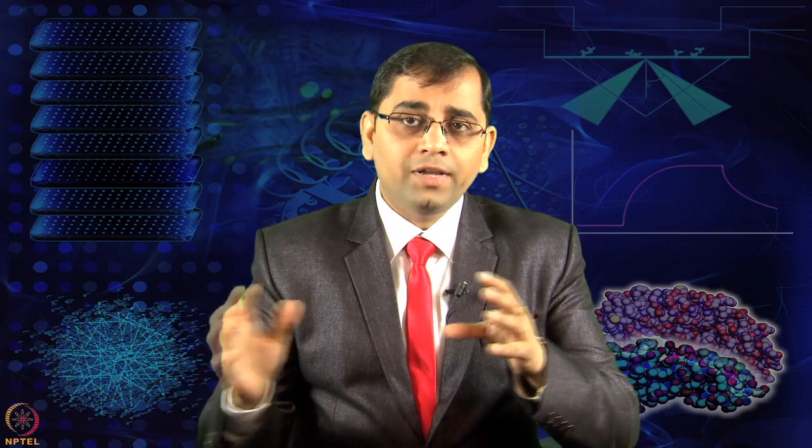But what if you want to determine not only that protein X binds to protein Y, but also the strength of binding — the on-rate, the off-rate, how strongly they associate and dissociate? Then you need to move to a label-free biosensor platform. Surface plasmon resonance, or SPR, is one very strong platform to offer this kind of approach.